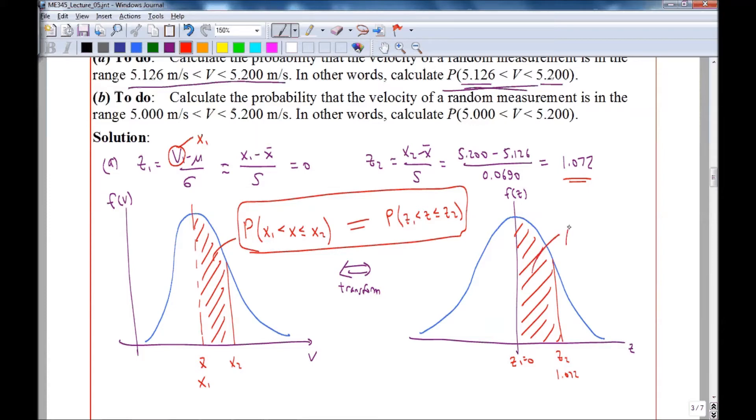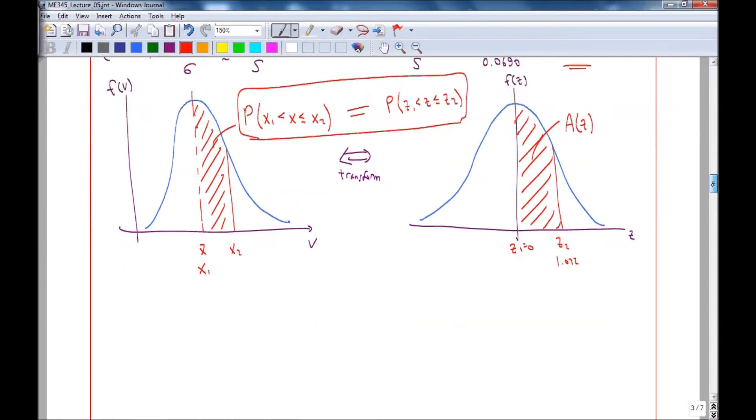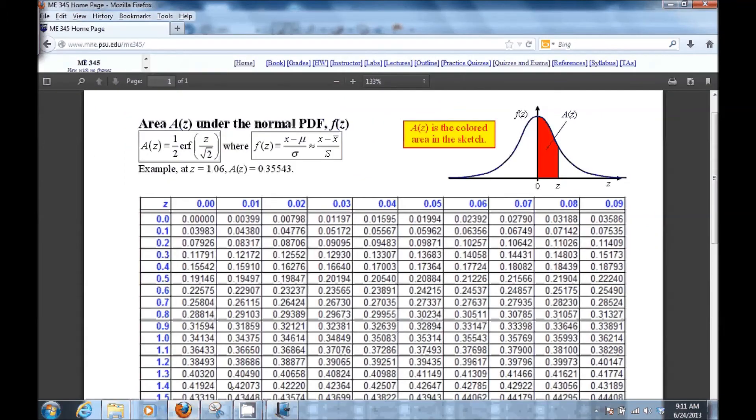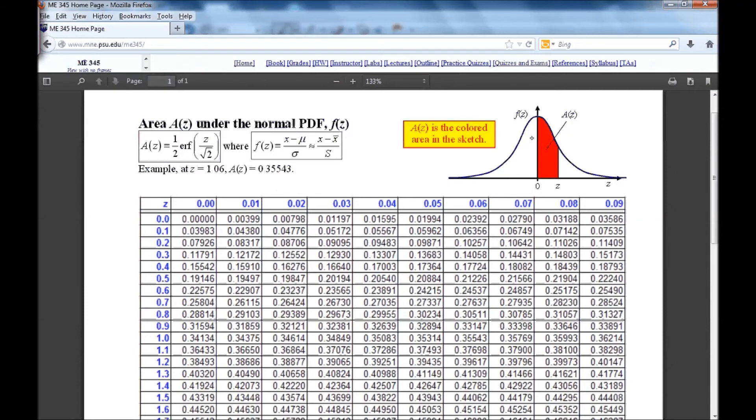Now, it turns out that this area is also called A of Z in our notation. So we simply need to look up A of Z in our table. So at Z2 equal 1.072, we look at the PDF table for the normal distribution, which I have up here. A of Z is actually defined as that area from 0 to Z.